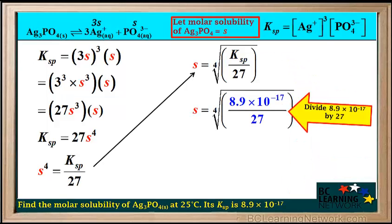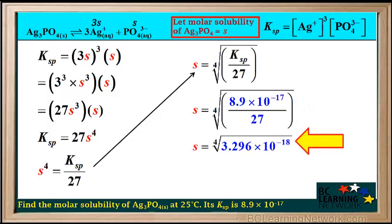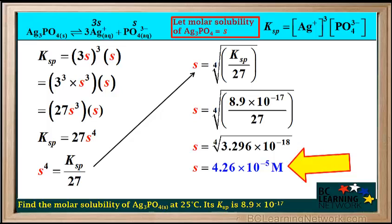On some calculators, you can solve this expression all in one step. Here, we'll do it step by step. We'll start by dividing 8.9 times 10 to the negative 17th by 27, and this gives us 3.296 times 10 to the negative 18th. We have more significant figures than we need here, but we'll round off to the correct number of significant figures at the end. So s equals the fourth root of 3.296 times 10 to the negative 18th, which gives us 4.26 times 10 to the negative 5th.